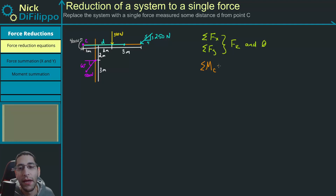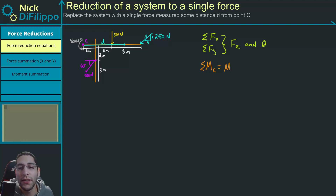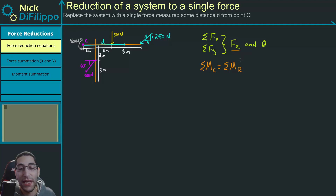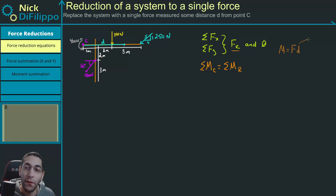Where it changes is we then equate: the sum of the moments of the system about point C is going to equal the resultant moments — the components of our resultant force, which will have an x and a y component. Using the idea that a moment equals a force times a distance, we can solve for what this offset distance is.